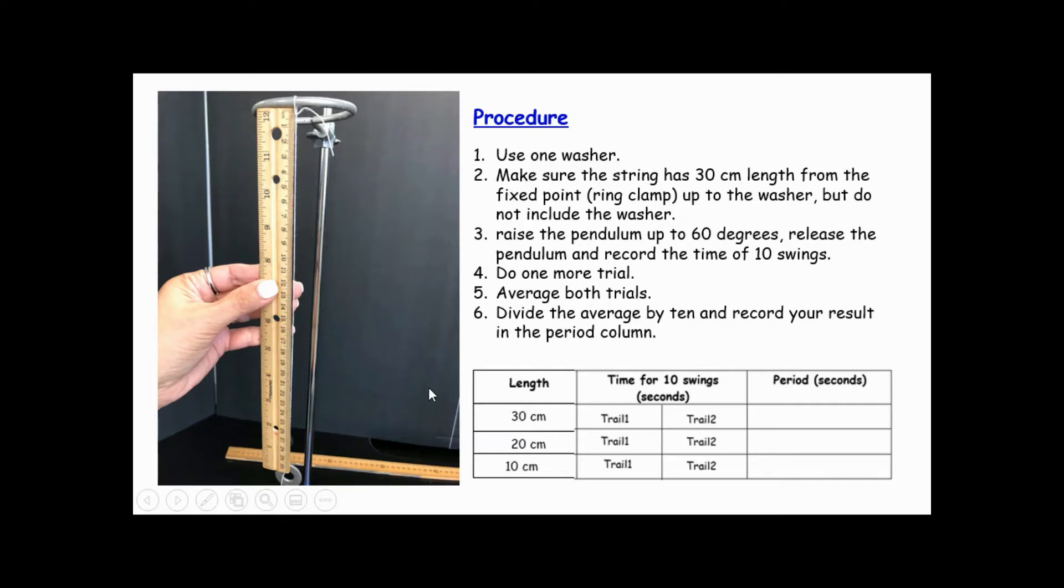The only variable that we are changing is the length of the string. We start with 30, and then 20, and finally 10. Then we have two trials. We average these trials, and the result you divide by 10. Then you have the period for each length for this pendulum.